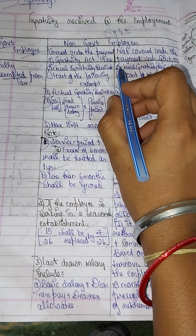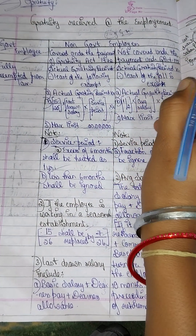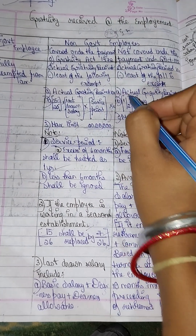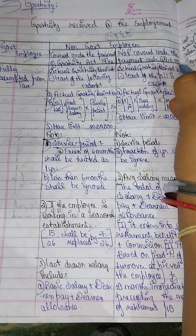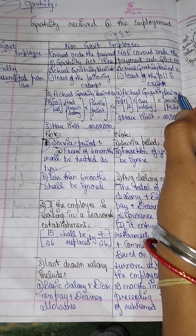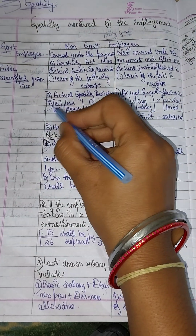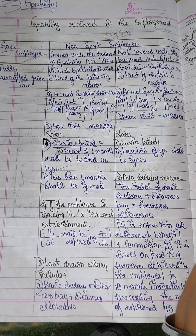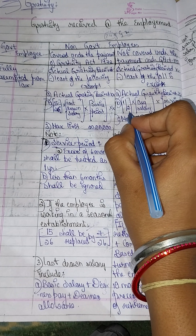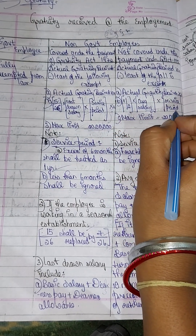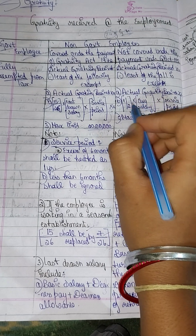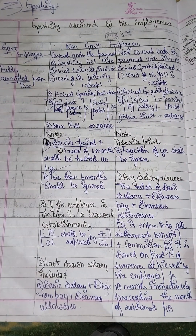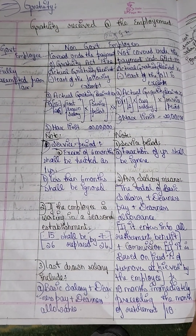For employees not covered under the Gratuity Act, the least of the following is exempt: (A) Actual gratuity received; (B) 1/2 × average salary × service period. The maximum limit here is also 20 lakhs.